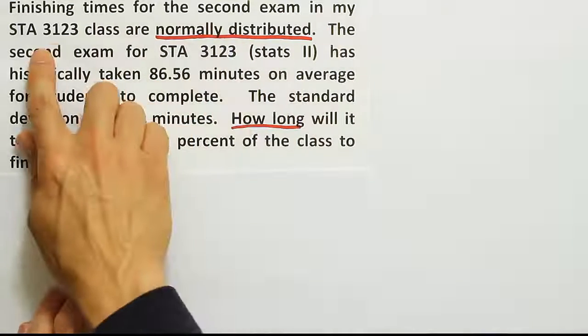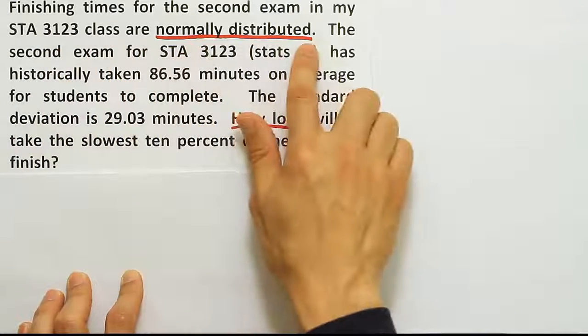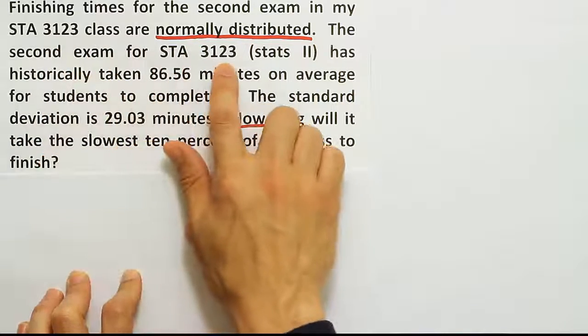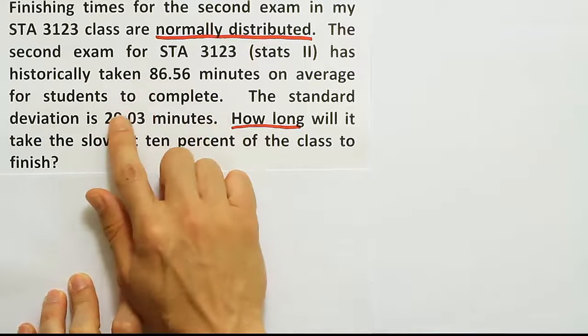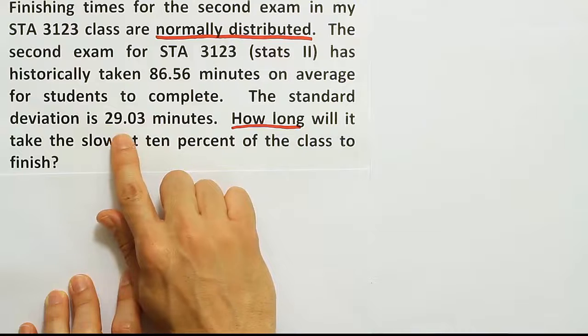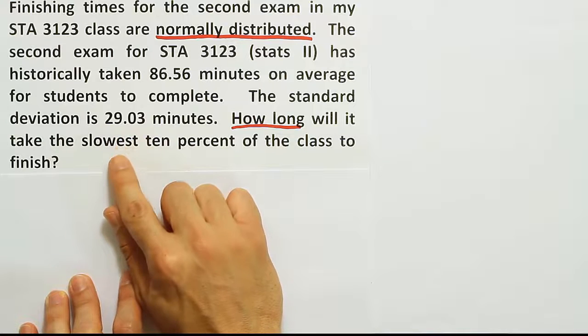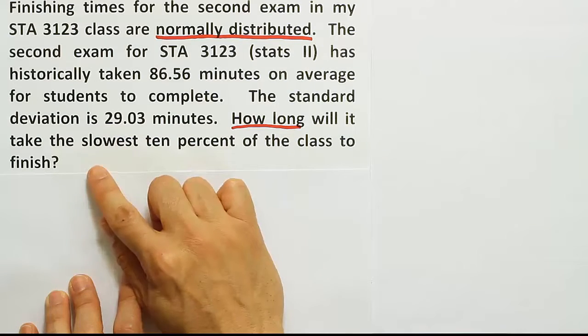Finishing times for the second exam in my STA 3123 class are normally distributed. The second exam for STA 3123 has historically taken 86.56 minutes on average for students to complete. The standard deviation is 29.03 minutes. How long will it take the slowest 10% of the class to finish?